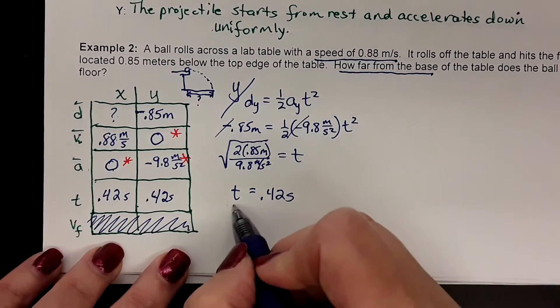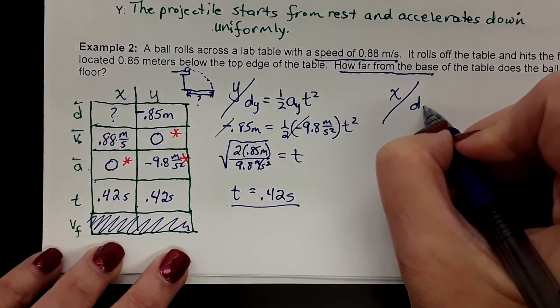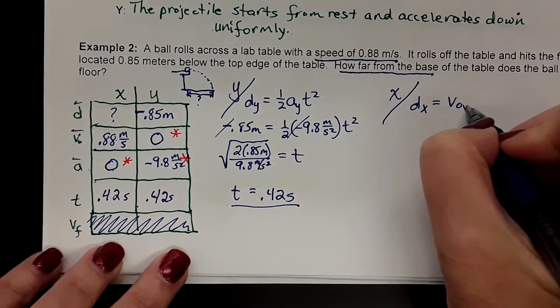Now, so we've got the time. Now we can go to the horizontal side and we can say dx equals v sub ox times t.